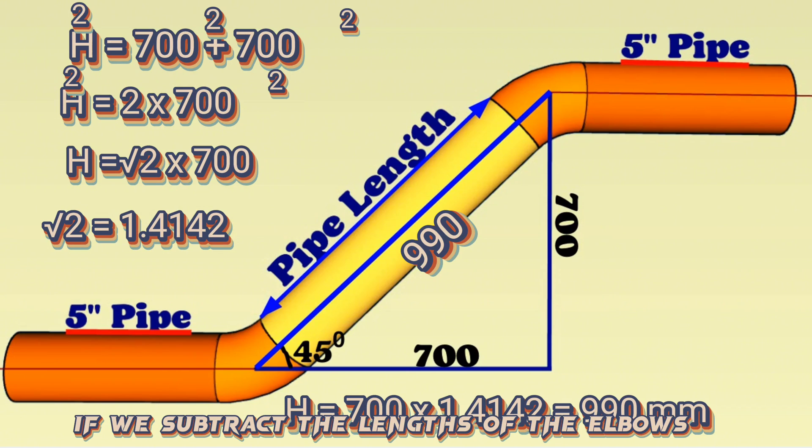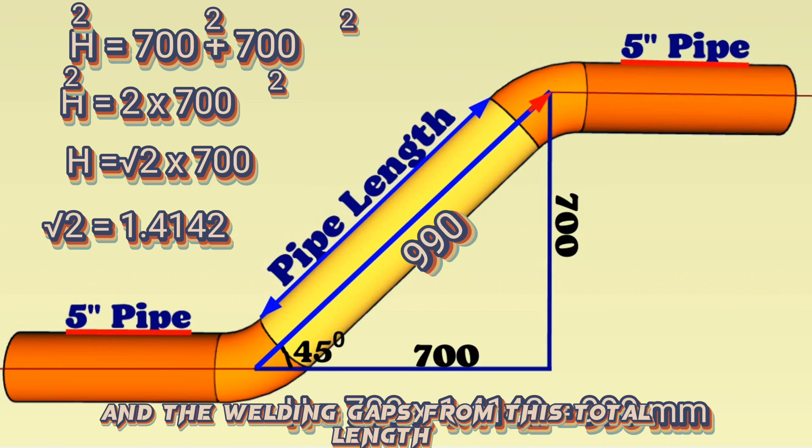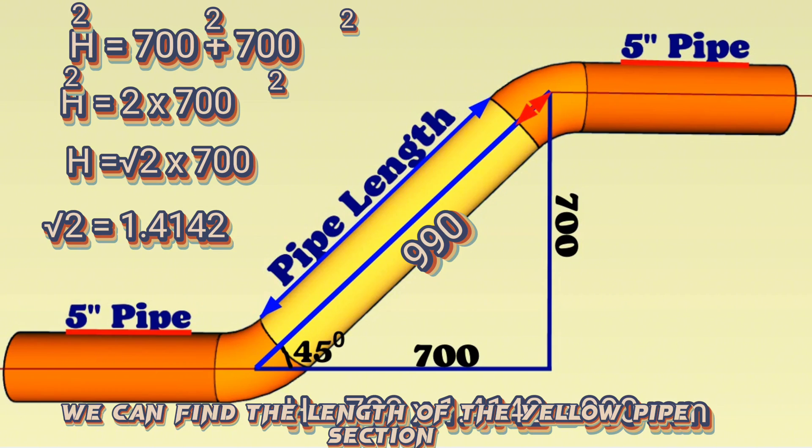If we subtract the lengths of the elbows and the welding gaps from this total length, we can find the length of the yellow pipe section.